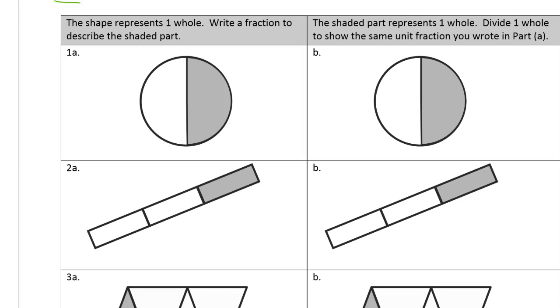This shape represents one whole. Write a fraction. We have two columns here. The directions for this can be weird, so you might not be sure exactly what you're supposed to do, but the directions are for each column. So this one says the shape represents one whole. Write a fraction to describe the shaded part.